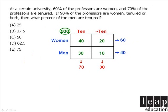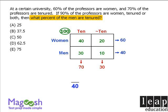Now the question asks: what percent of all the men are tenured? We have 40 men altogether, and of those 40 we know that 30 are tenured. So what percent is this? Well, 30 over 40 is equal to 3 quarters, and 3 quarters is equal to 75%. So 75% of the male professors are tenured. The answer is E.